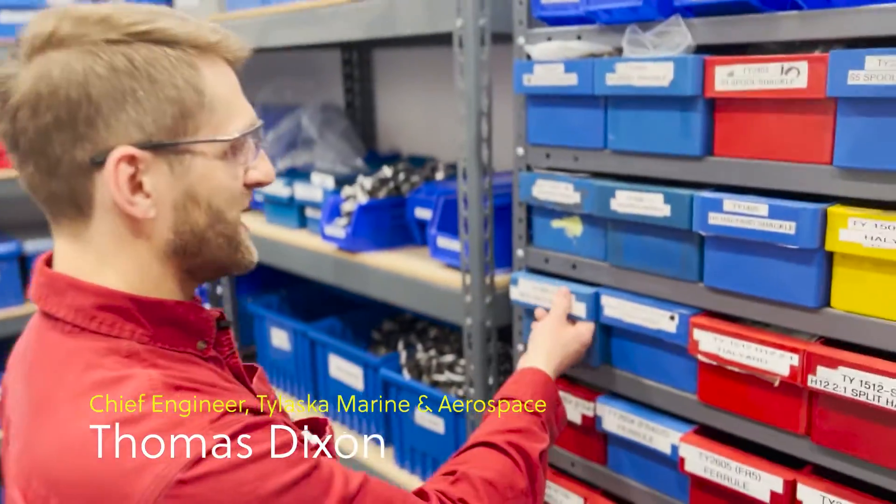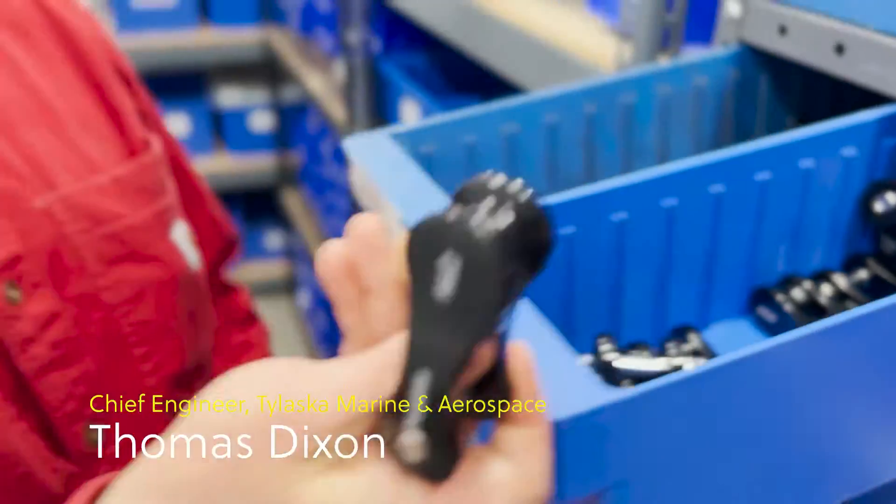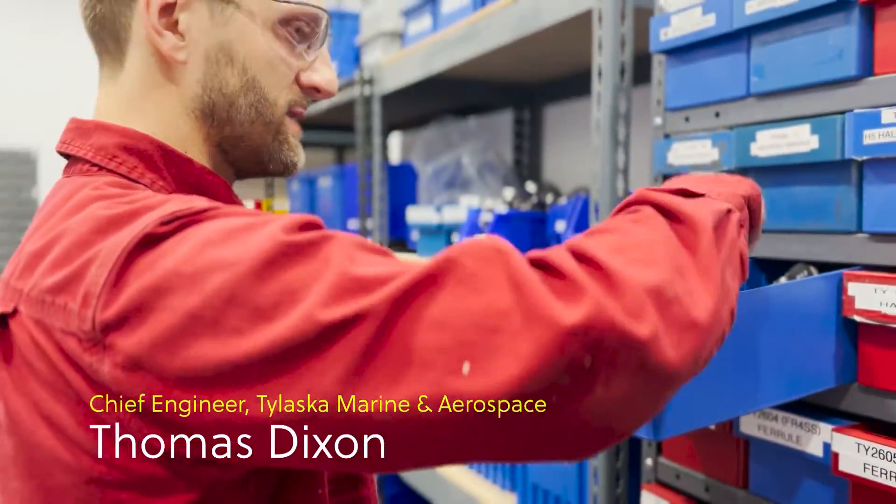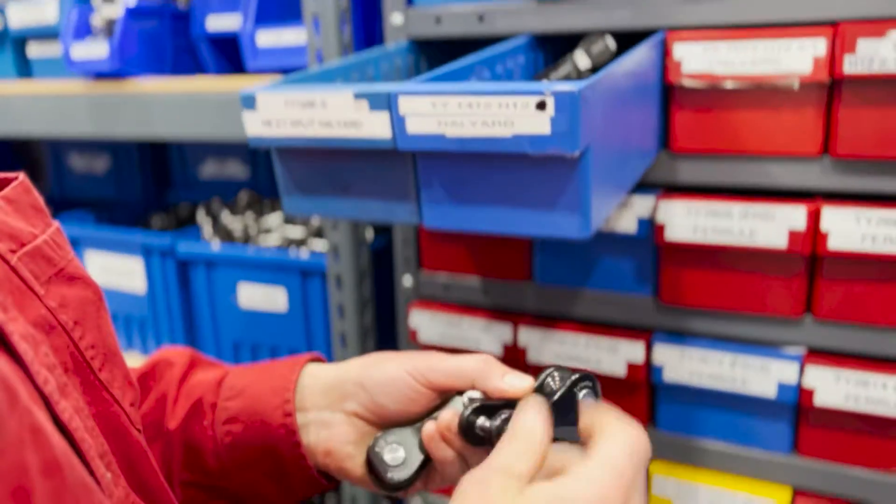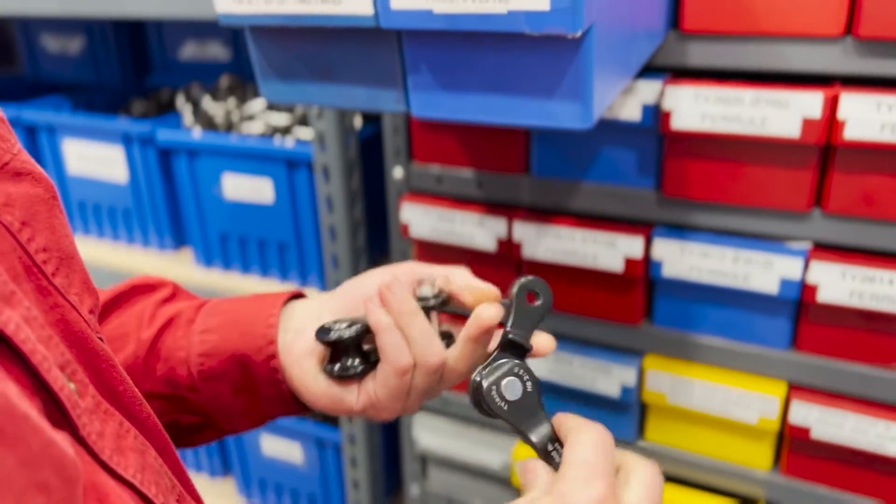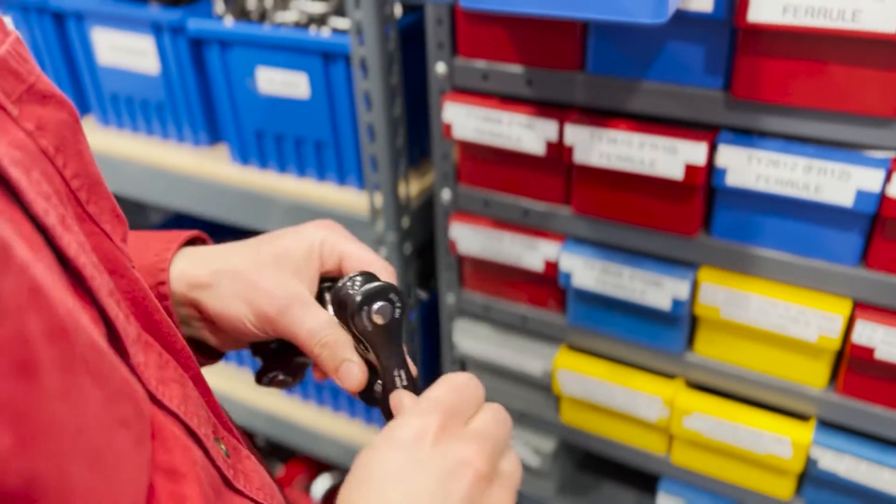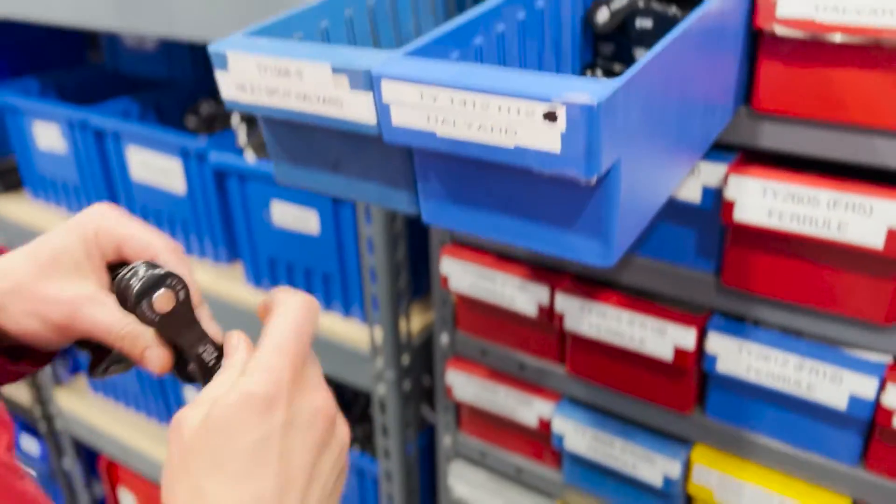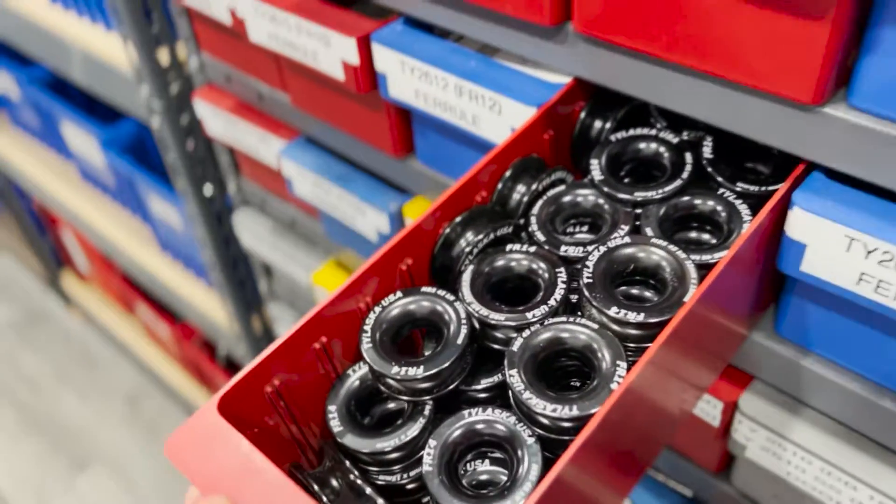We got halyard shackles up here. We've got our old popular standard halyards as well as our two-to-ones and our lesser-known two-to-one splits that can open like a snatch block, popular when you want to take your halyard shackle off your halyard, as well as our low friction rings in all different sizes.